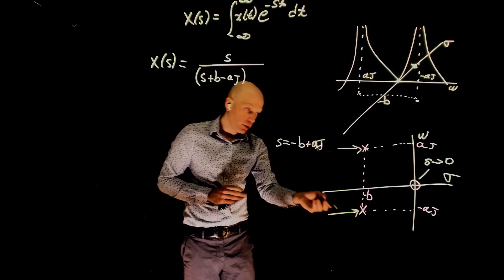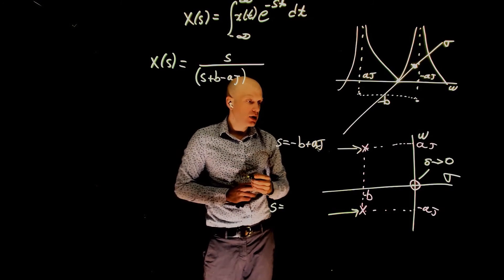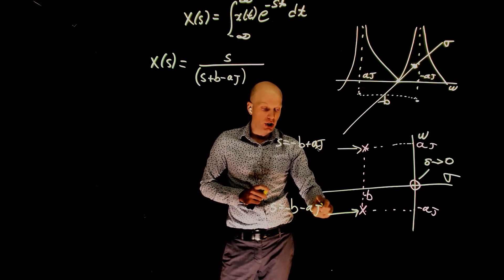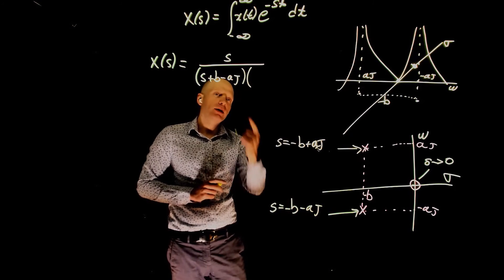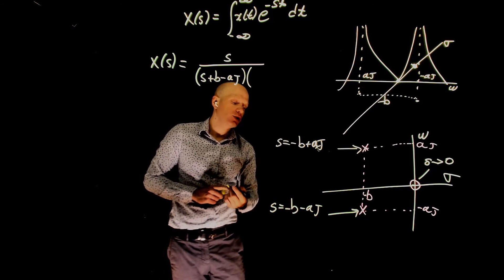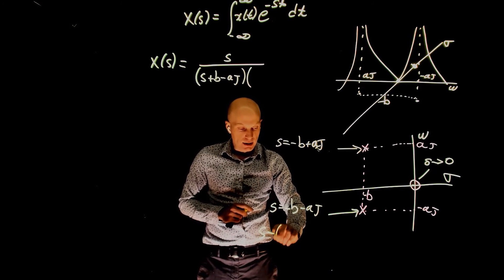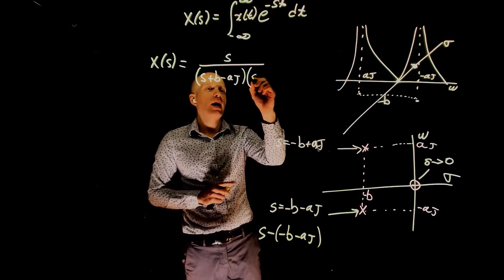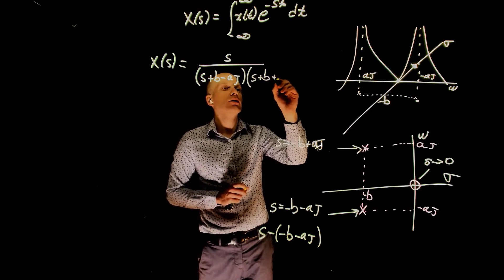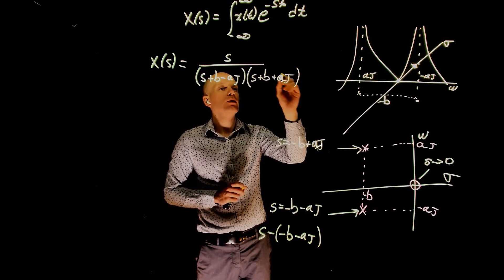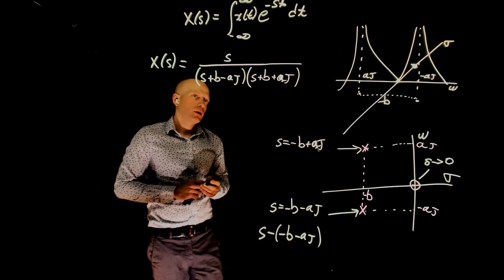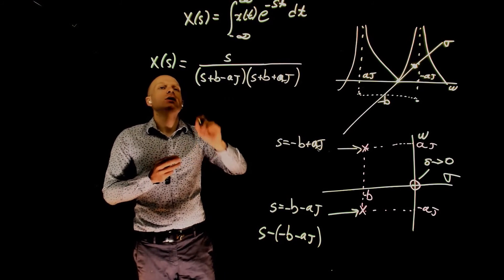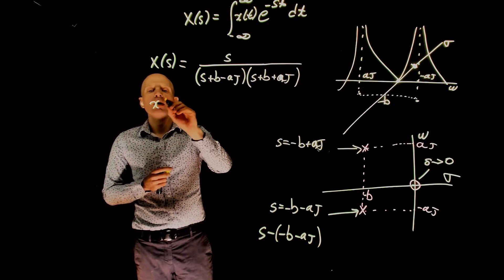For the conjugate pole at s equals negative b minus aj, we divide by s plus b plus aj. This function now displays the same behavior as our 3D representation, and this function is the Laplace transform of x of t.